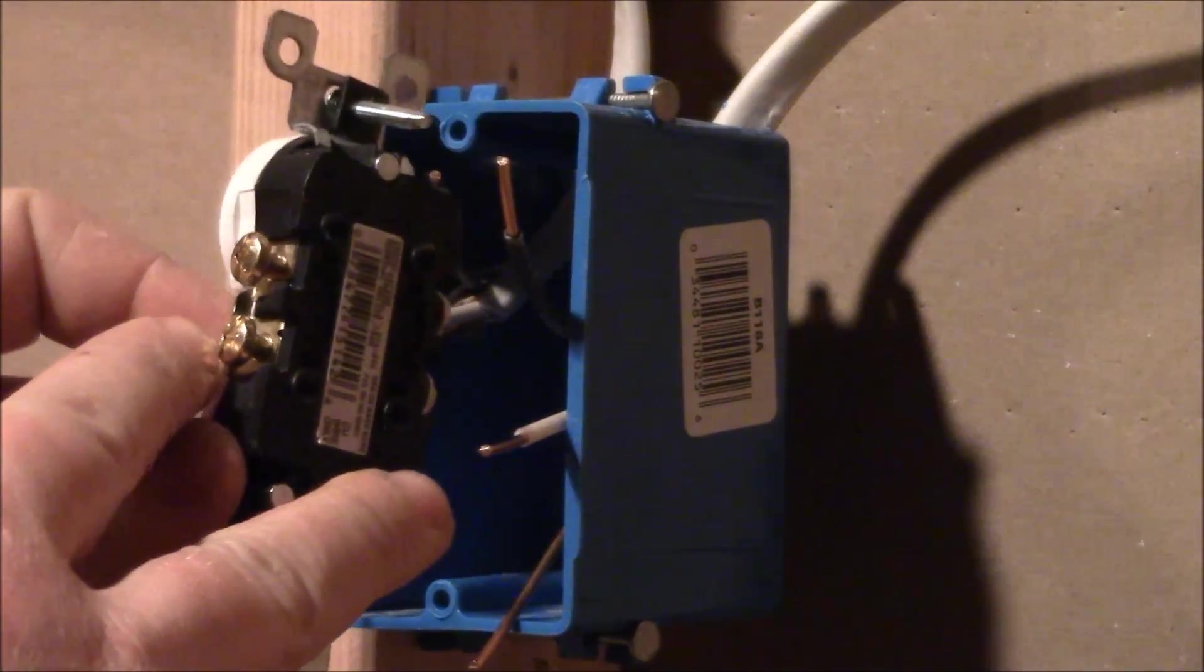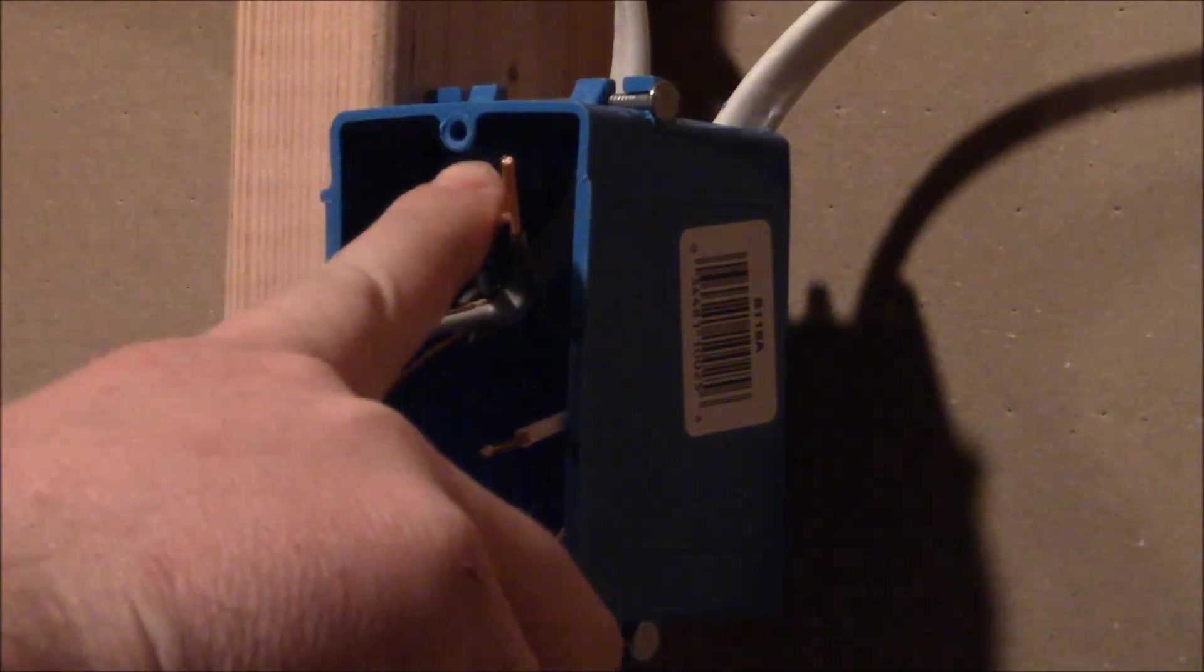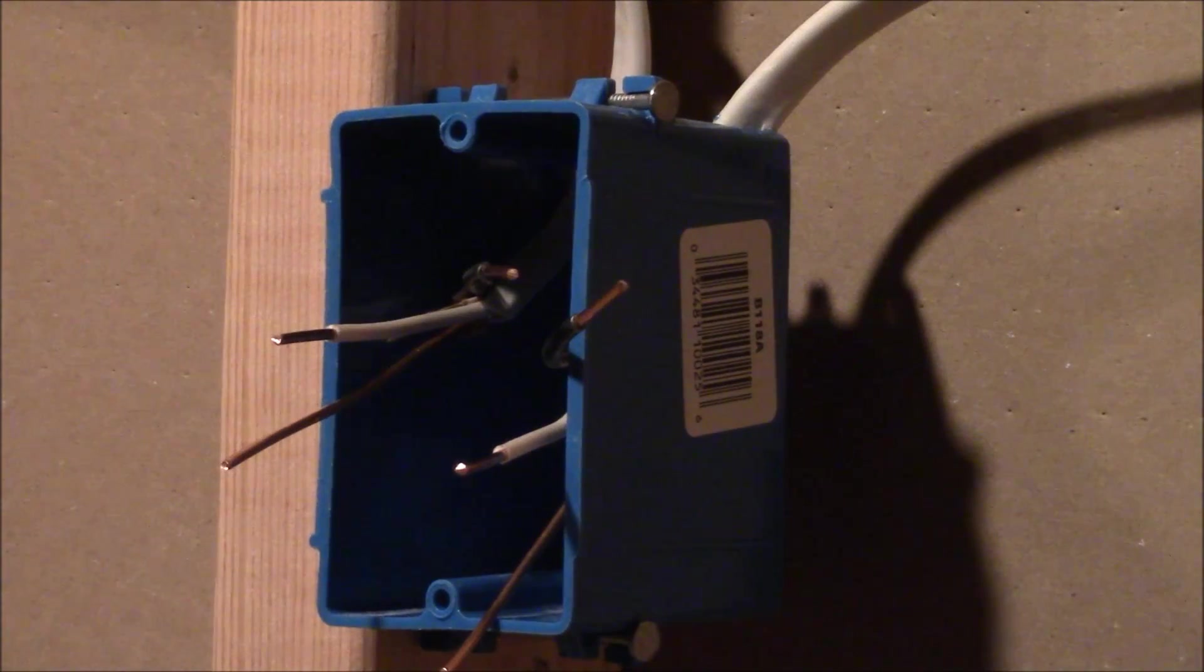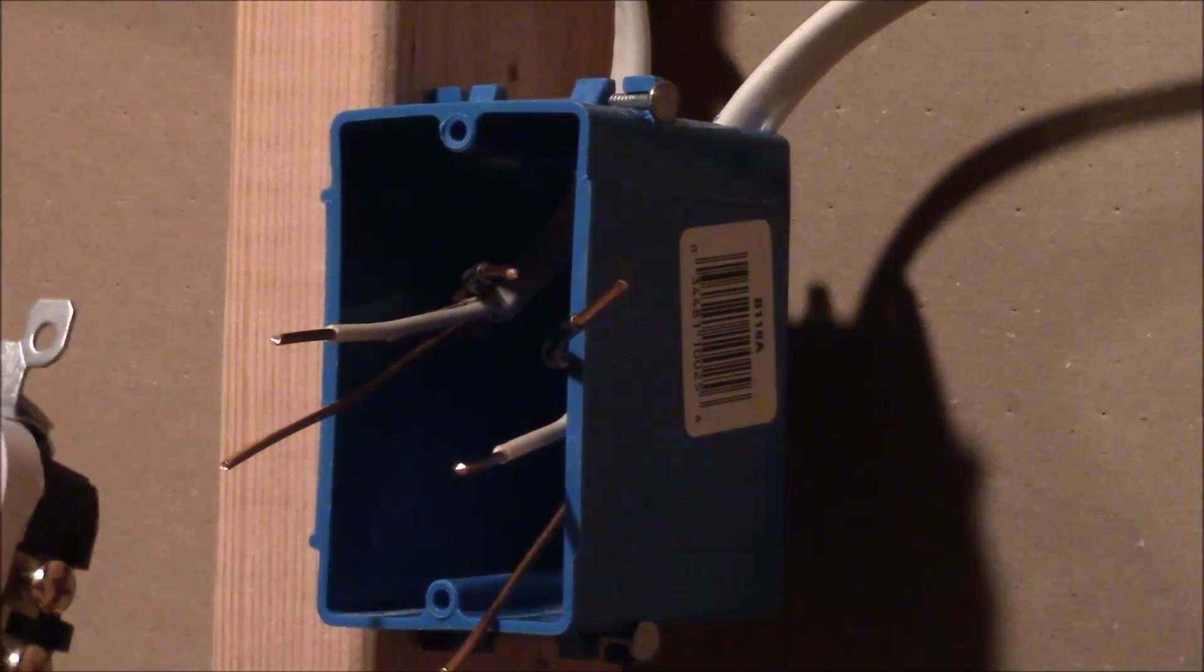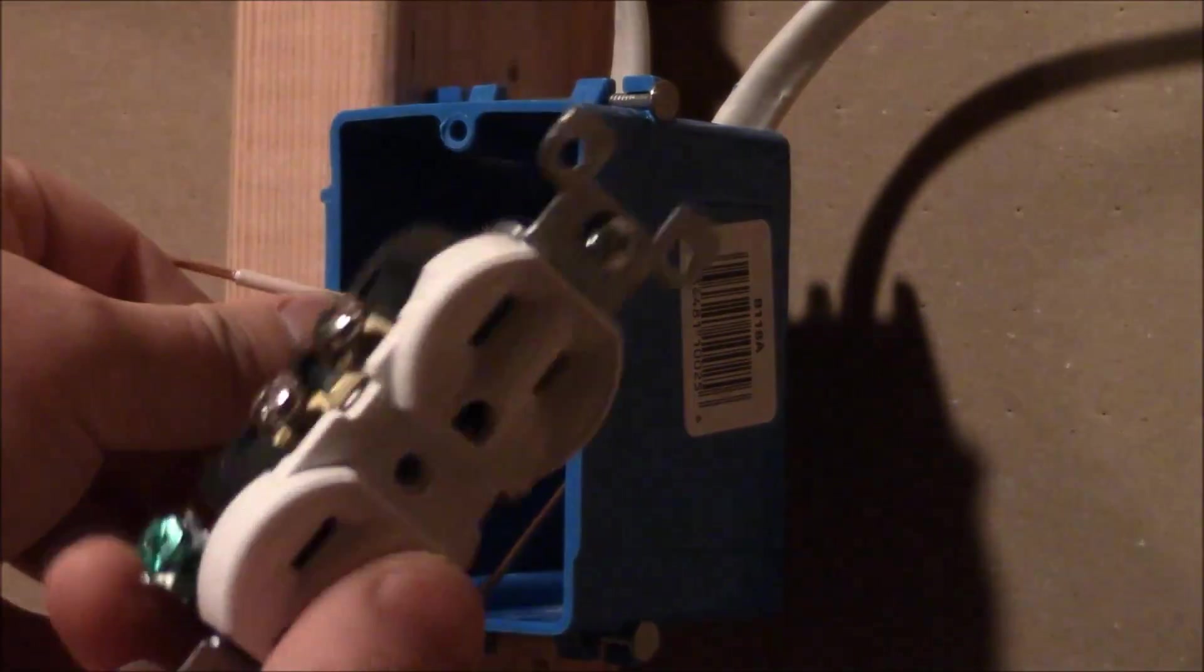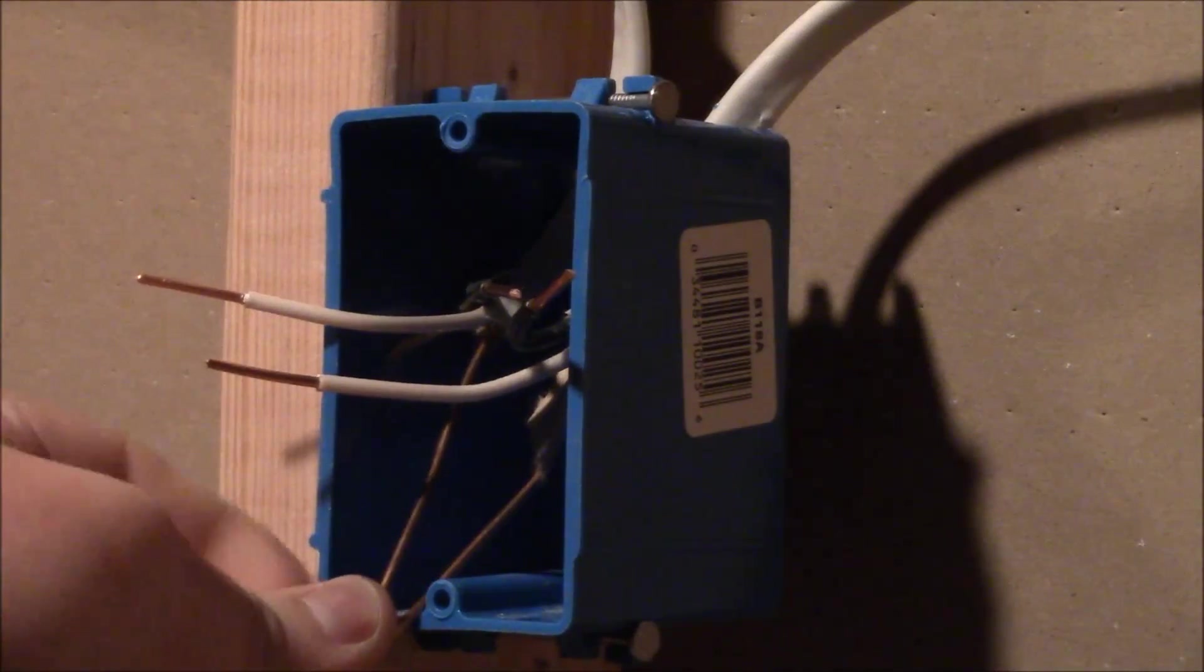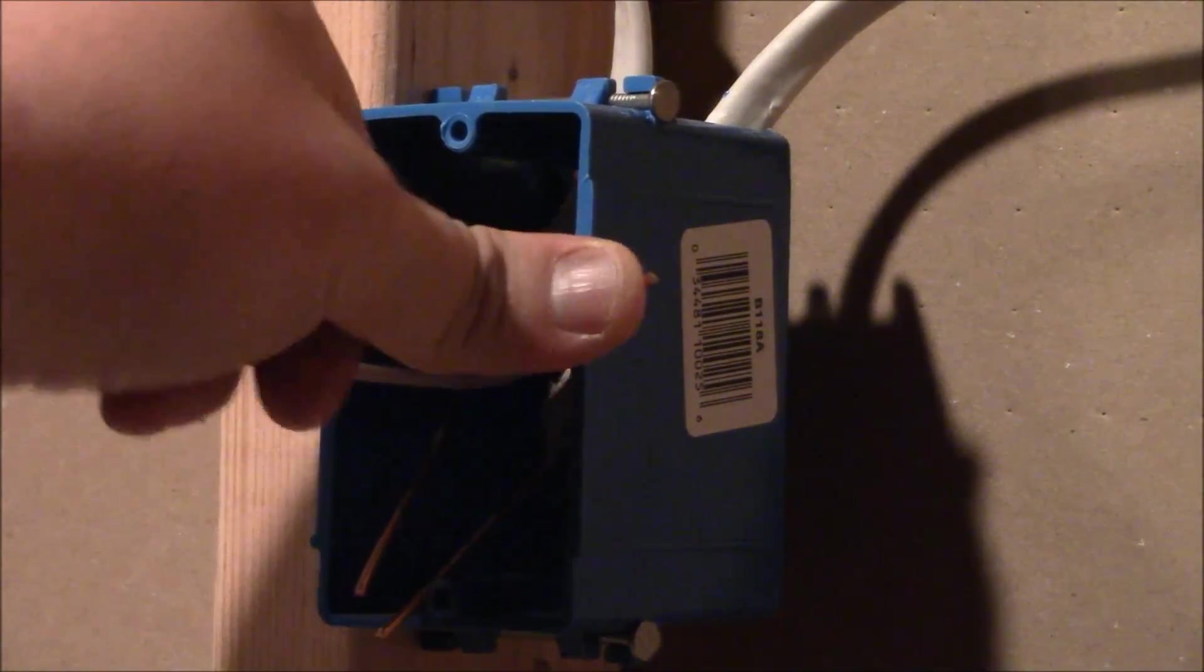Brass is on the right hand side if you're looking at it. Those are hot so you're going to want to have your black wires more or less in that area, neutral to the side and ground towards the bottom. So neutral, hot, ground.